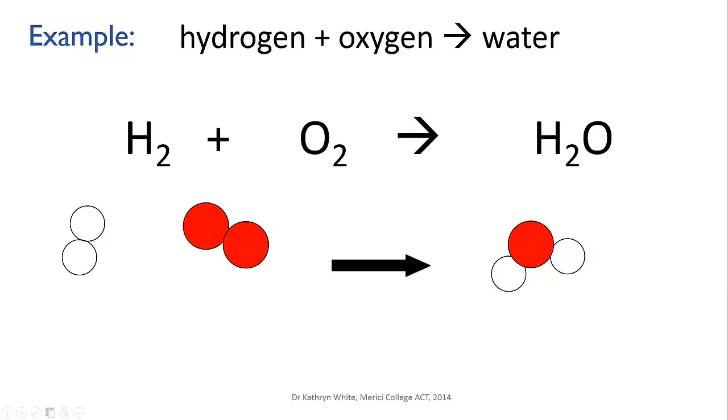There are two ways that you might deal with this. One would be to change the formula of water. Let's make it H2O2. Then we've got two hydrogens on the left and two on the right, and two oxygens on the left and two on the right. Can we do this?